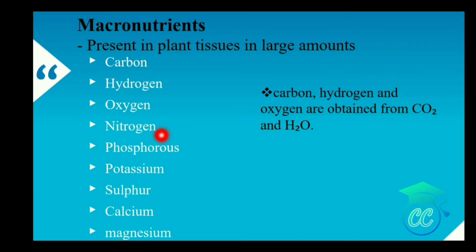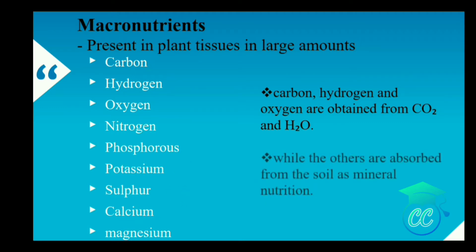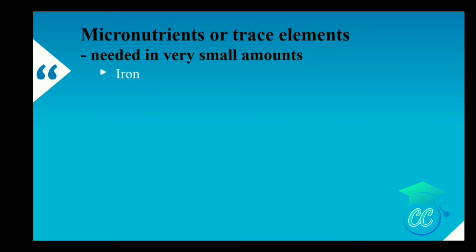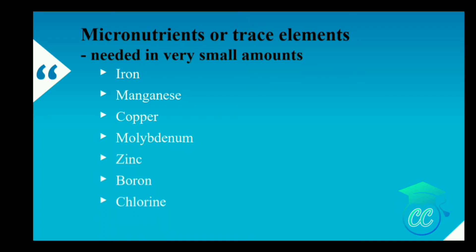Nitrogen, phosphorus, potassium, sulfur, calcium and magnesium are directly obtained from soil as mineral nutrients. Micronutrients — from the word itself it is clear that they should be present in a very small amount. Micronutrients include iron, manganese, copper, molybdenum, zinc, boron, chlorine and nickel.